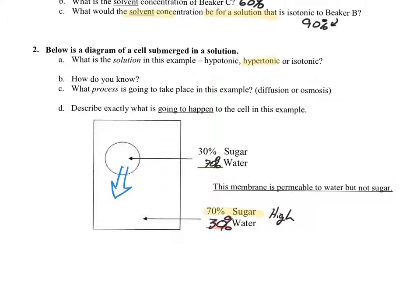Water's going to move the opposite way the solute would move if it could. The solute is high outside, it would go in — it can't, so water is going to move out. Another way: water moves from its high to its low — water is 70% inside, 30% outside, so water moves from high to low. And the third way: if it's hypertonic, water moves out.